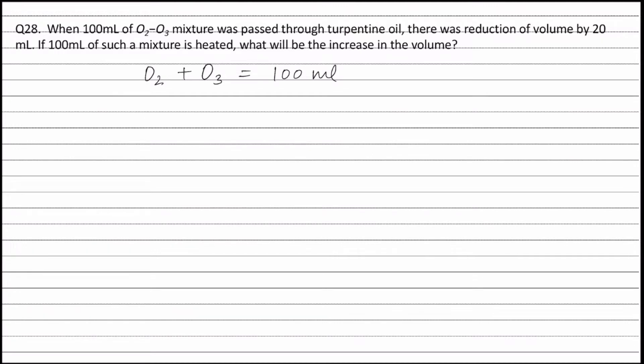Therefore, we can say the volume of ozone is equal to 20 ml and therefore, volume of oxygen is equal to 100 minus 20 which is equal to 80 ml.